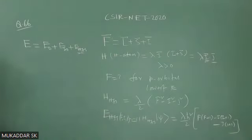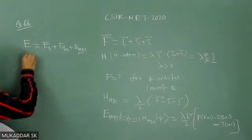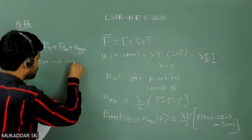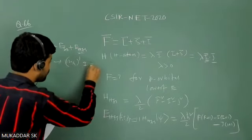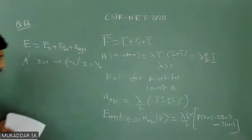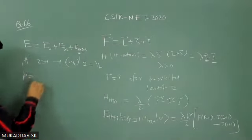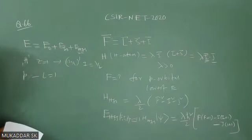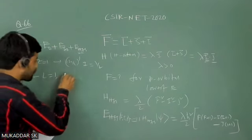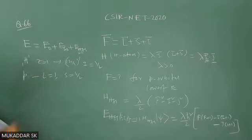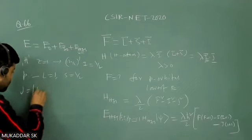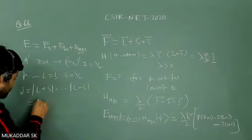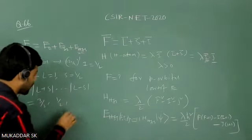For a hydrogen atom, you have one unpaired proton, so the nuclear spin I of the hydrogen atom is 1/2. For the P orbital, L = 1. Since one electron is present, the spin S = 1/2. As you know, J ranges from |L+S| to |L−S|, which means J can take the value 3/2 or 1/2.